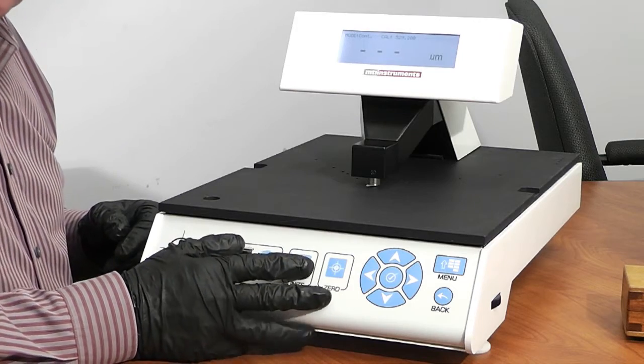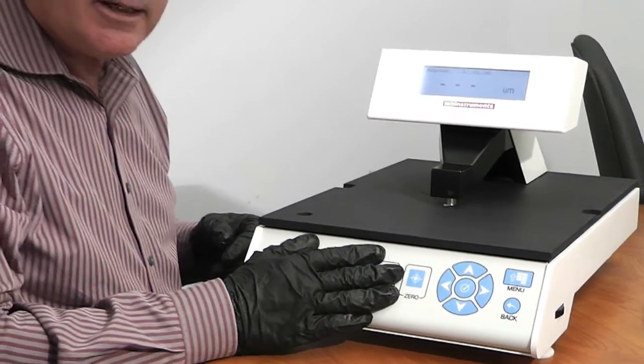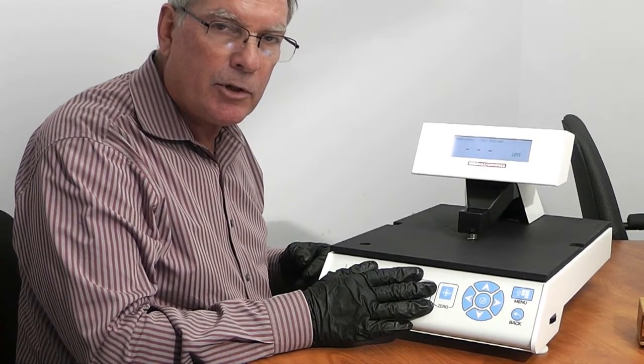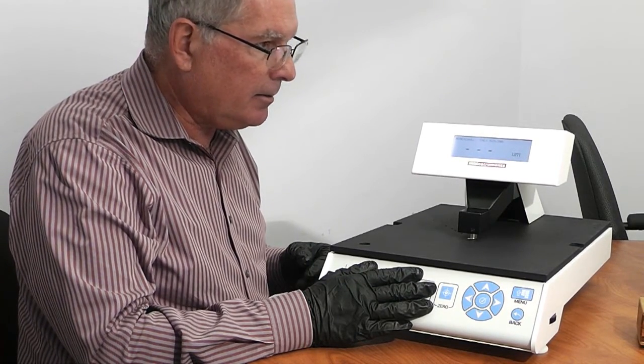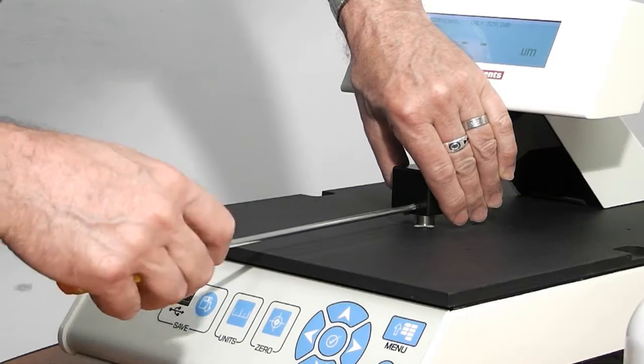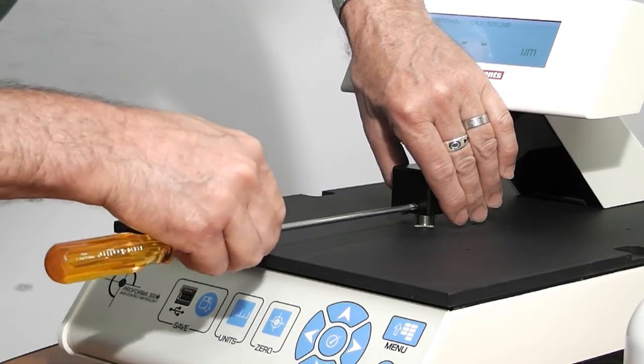The Proforma 300i can also measure semi-insulating or semi-conducting materials, such as gallium arsenide, high bulk resistivity, indium gallium phosphide, and other such exotic materials. In order to do that, what we have to do is take off this nose piece right here.